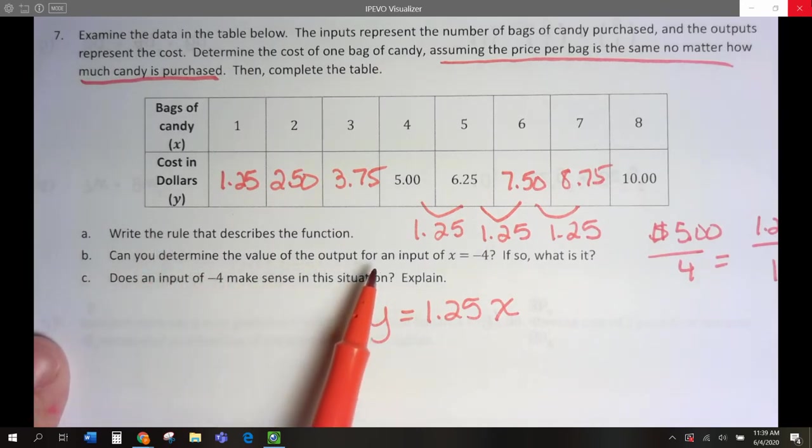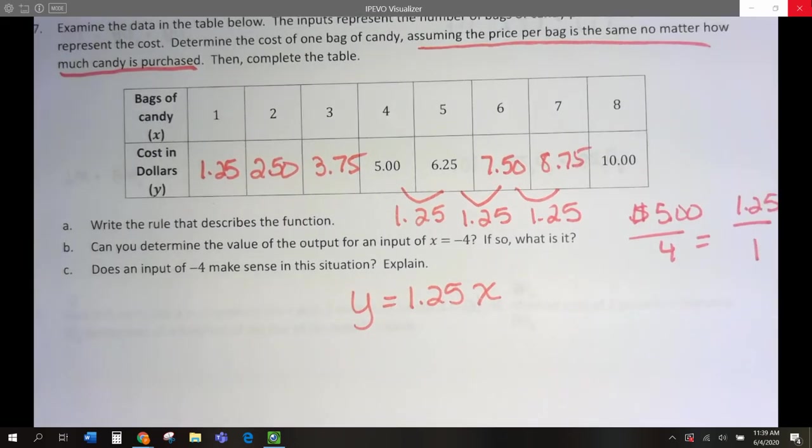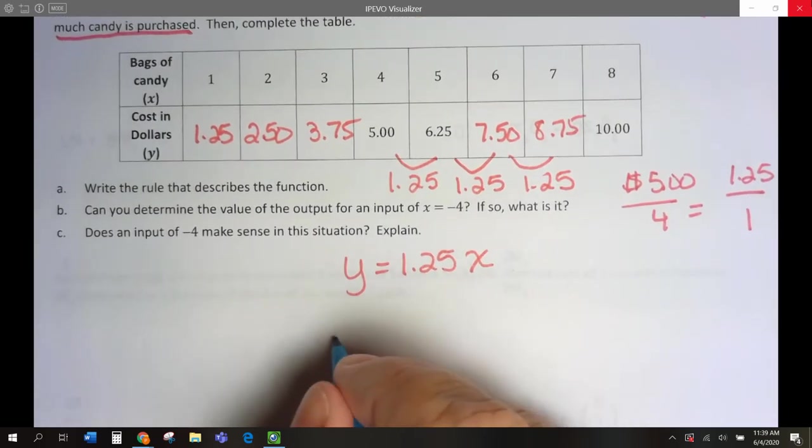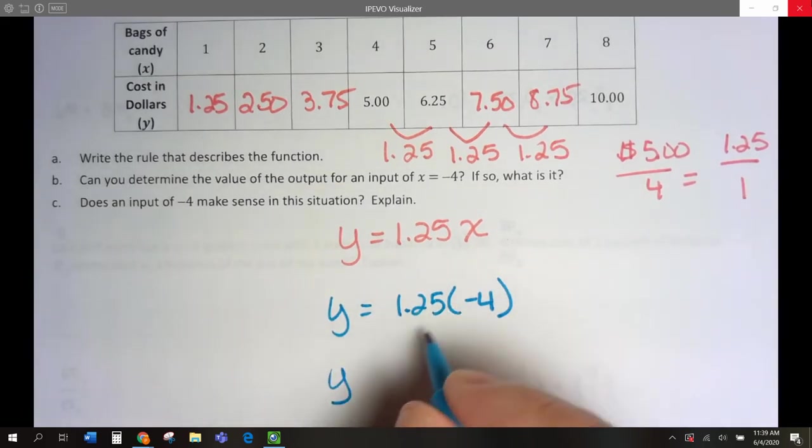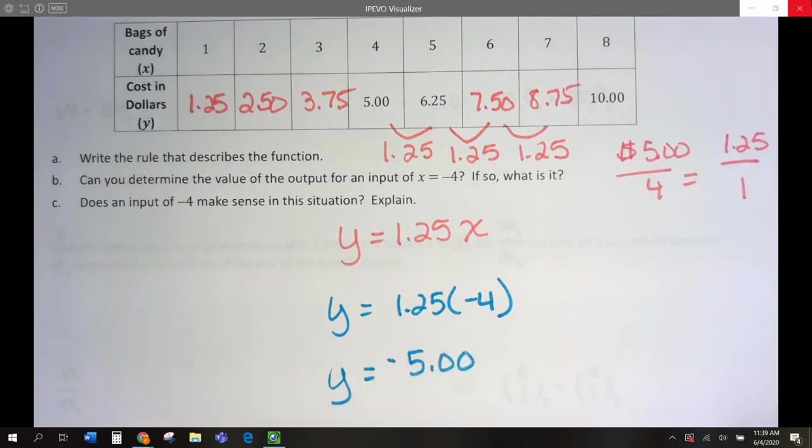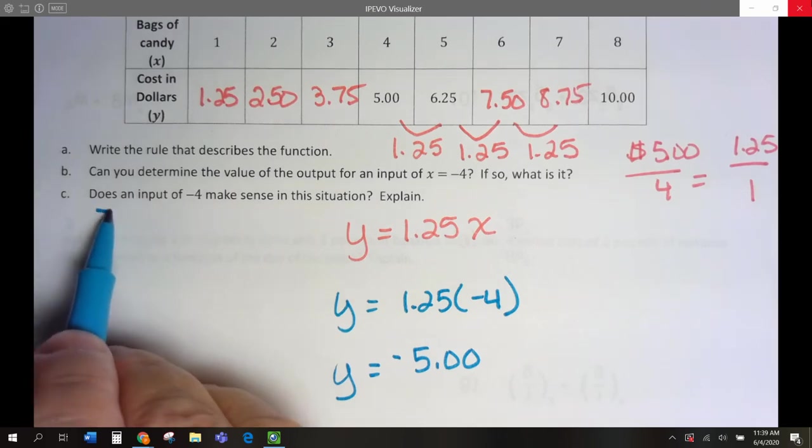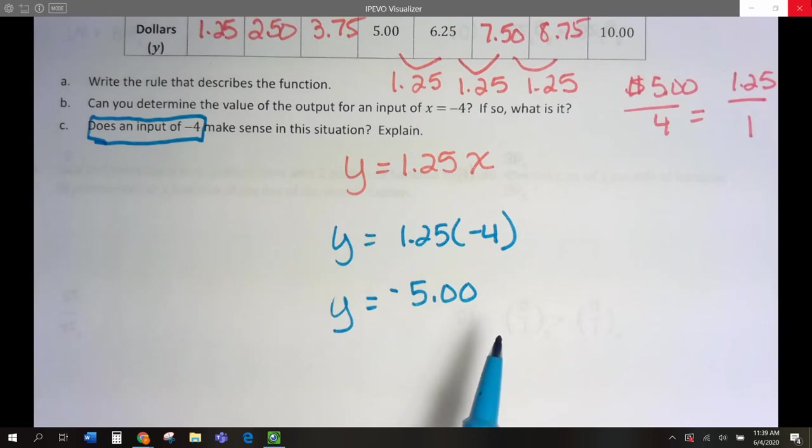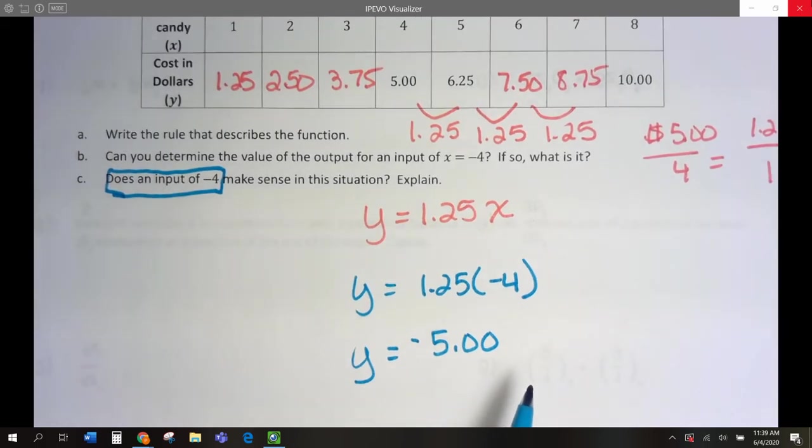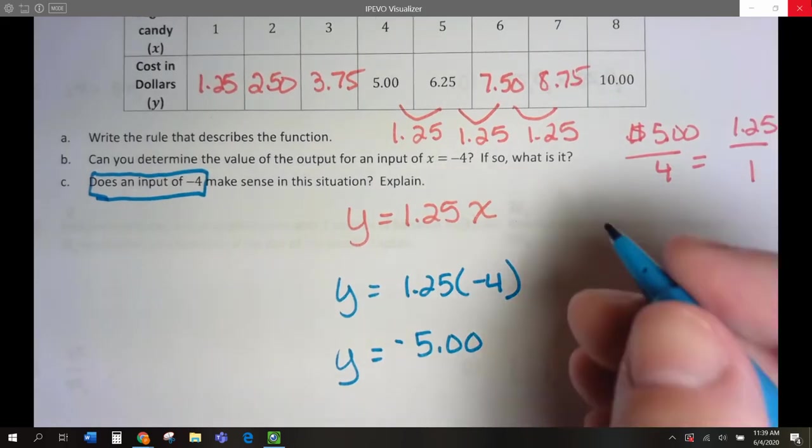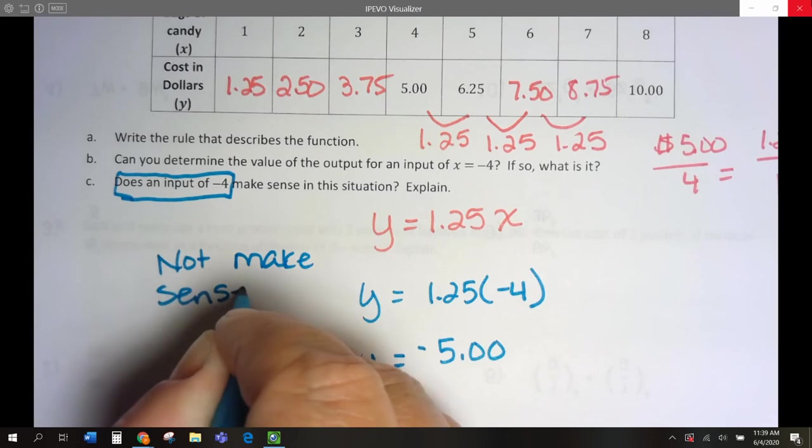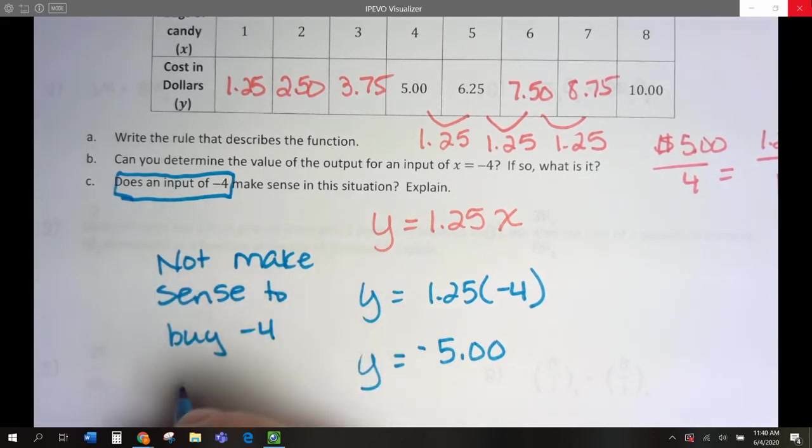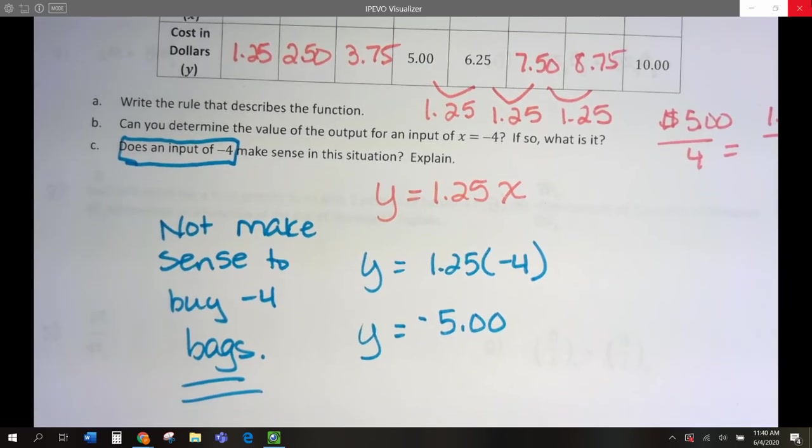Number 4. Can you determine the value of the output if the input for x is negative 4? So what if I wanted to put negative 4 in here? So y would equal $1.25 times negative 4. So we would multiply this out and y, positive times negative is negative, would be negative $5. We can do that, but does an input of negative 4 make sense? Would we ever put in negative, buy negative 4 bags of candy? No, it really doesn't make sense unless we're getting a refund. But in terms of purchasing, no, that makes sense. It does not make sense. It does not make sense to buy negative 4 bags. If you're going to be buying something, you're going to be using a positive number or zero.